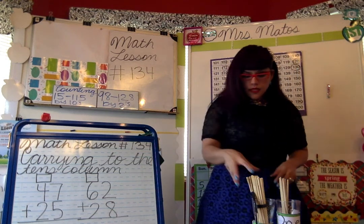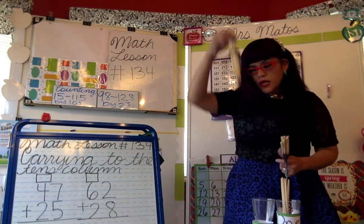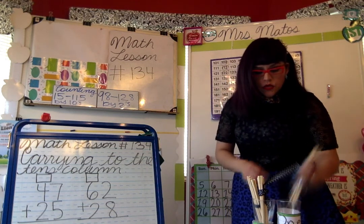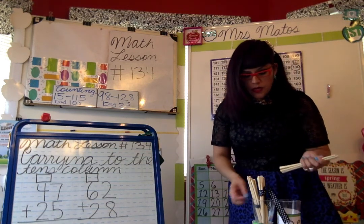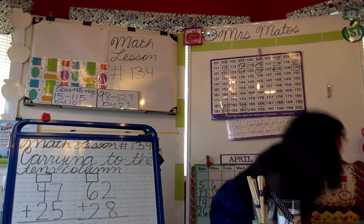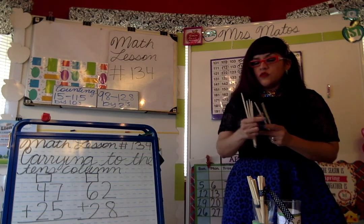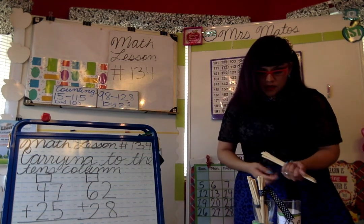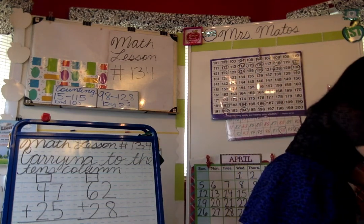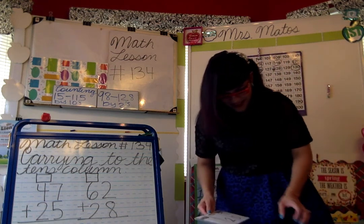All right, so we have 10, 20, and then you add 7 more. So 20 — keep it in your head — is the largest number. 21, 22, 23, 24, 25, 26, and 27. All right, so there's a total of 27 chopsticks. Why does your teacher have so many? I don't know!